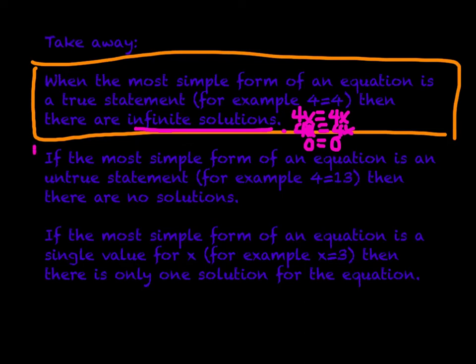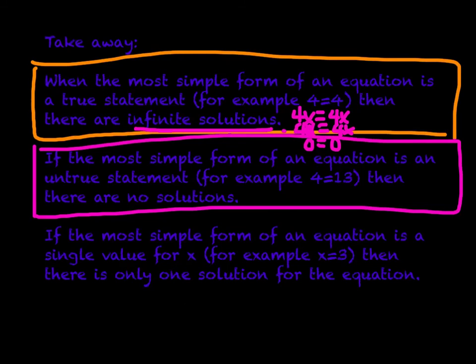If the most simple form of an equation is an untrue statement, for example, 4 is equal to 13, then there are no solutions to that situation. That means there are parallel lines. They will never cross. They will never intersect. They're always going to be parallel.